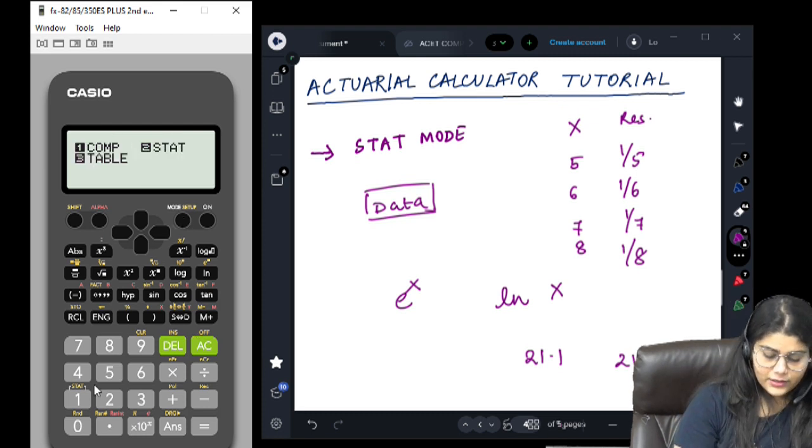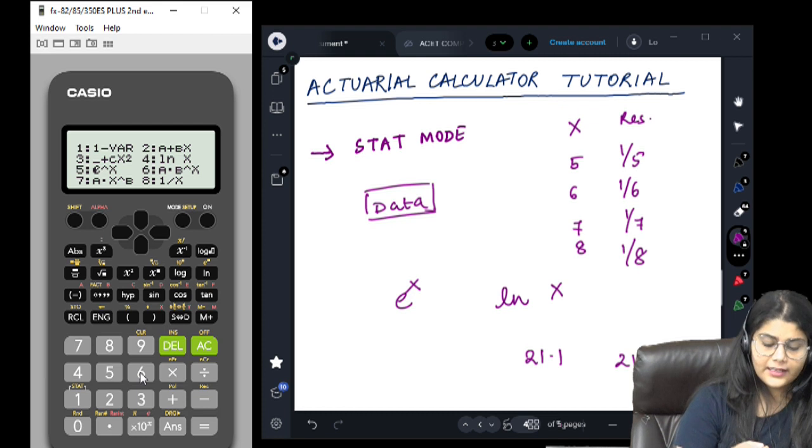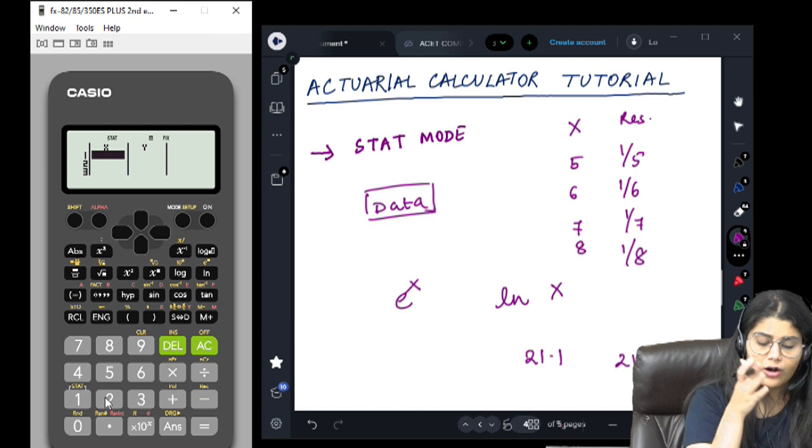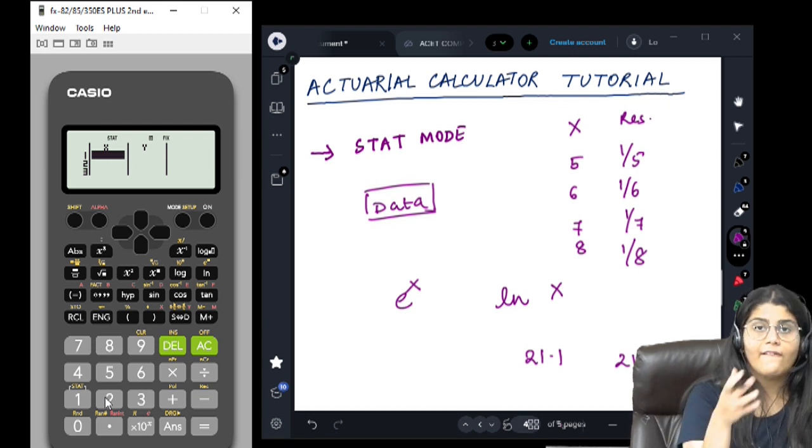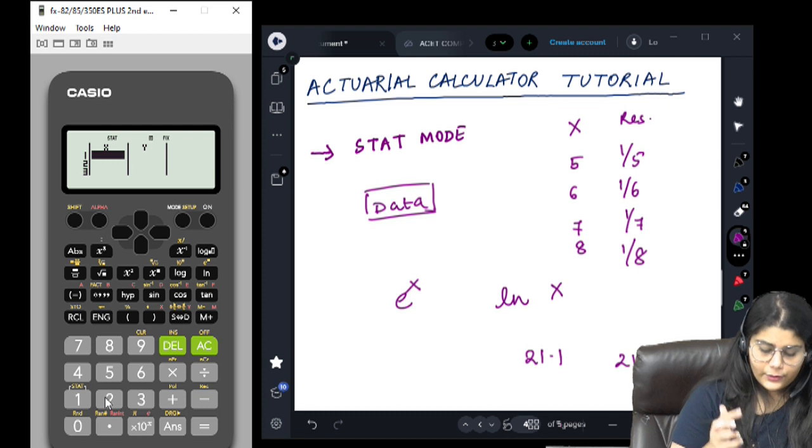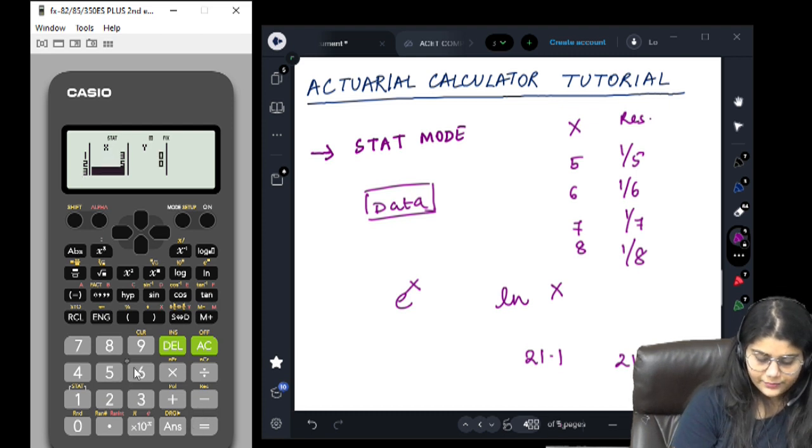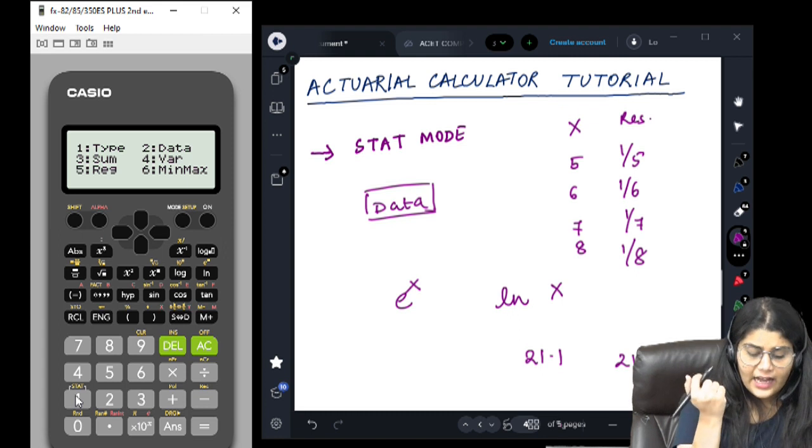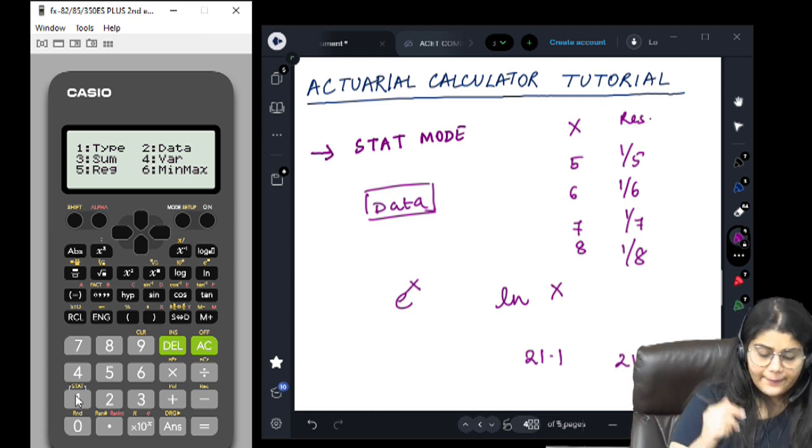For example, if it's a two variable thing, we will go for option number 2. Automatically, you get two columns for inputting your data. One for x values, one for y values. Let's input these. I am just inputting three sets for once. I have input this. If we enter the stat mode, naturally we have a few different options.